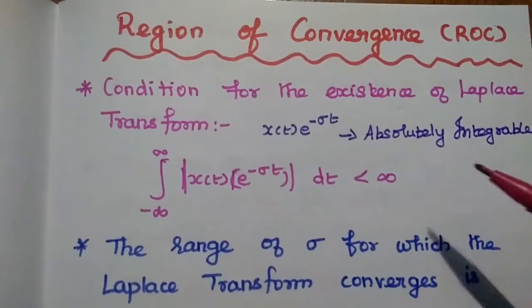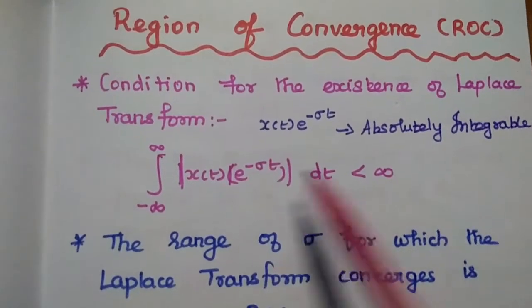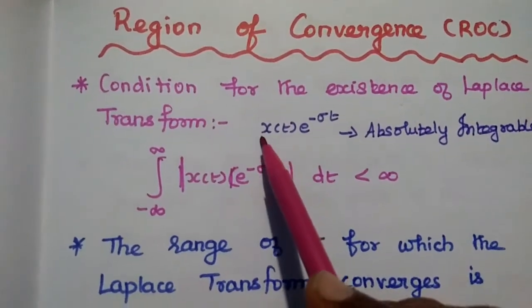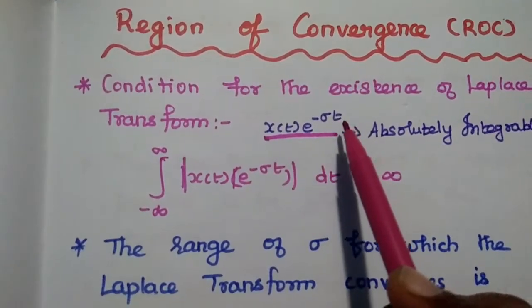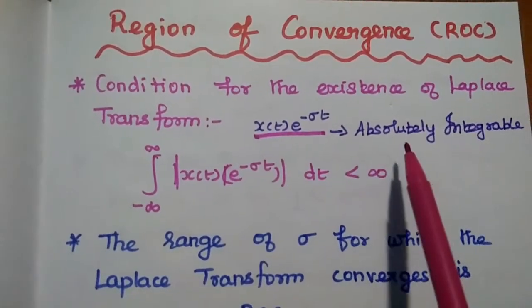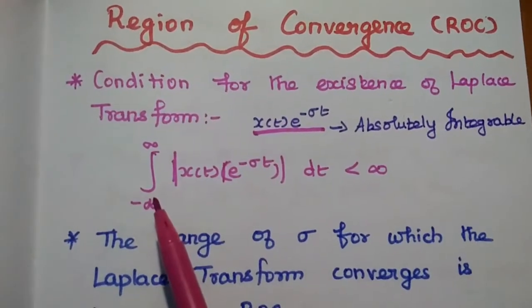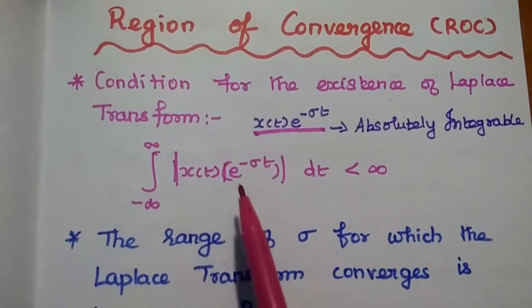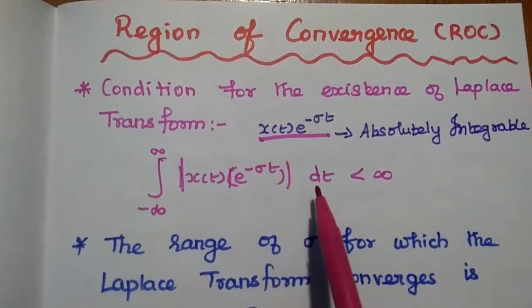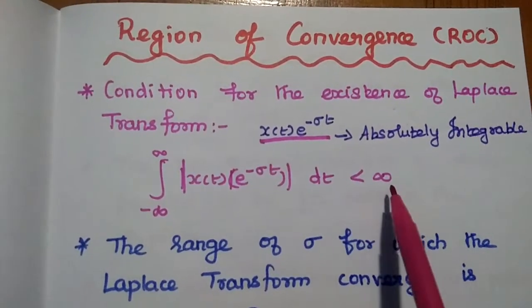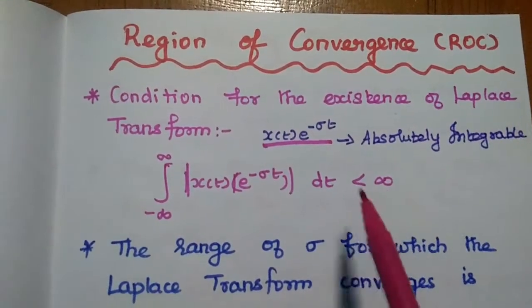Let's start with the condition for the existence of the Laplace transform. The condition is that X(t) times e^(−σt) should be absolutely integrable. That means the integral of X(t)e^(−σt)dt should be a finite value — it should be less than infinity.